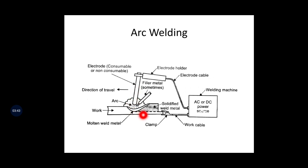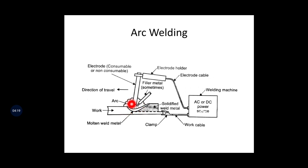To establish the arc, you have to bring the electrode near to the workpiece. The gap between the electrode and the workpiece must be small — less than 0.5 mm. In this gap, ionization of the air medium takes place, and electrons start jumping from the electrode (cathode) to the workpiece (anode). The flow of electrons constitutes electricity, and as electricity transfers from cathode to anode, an electric arc is established.